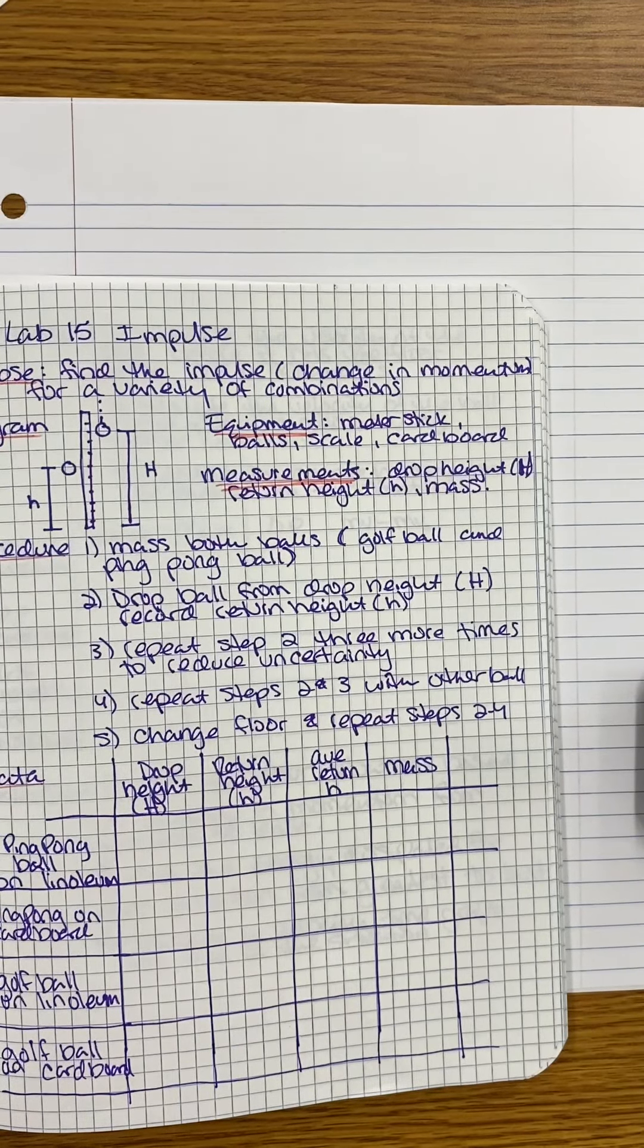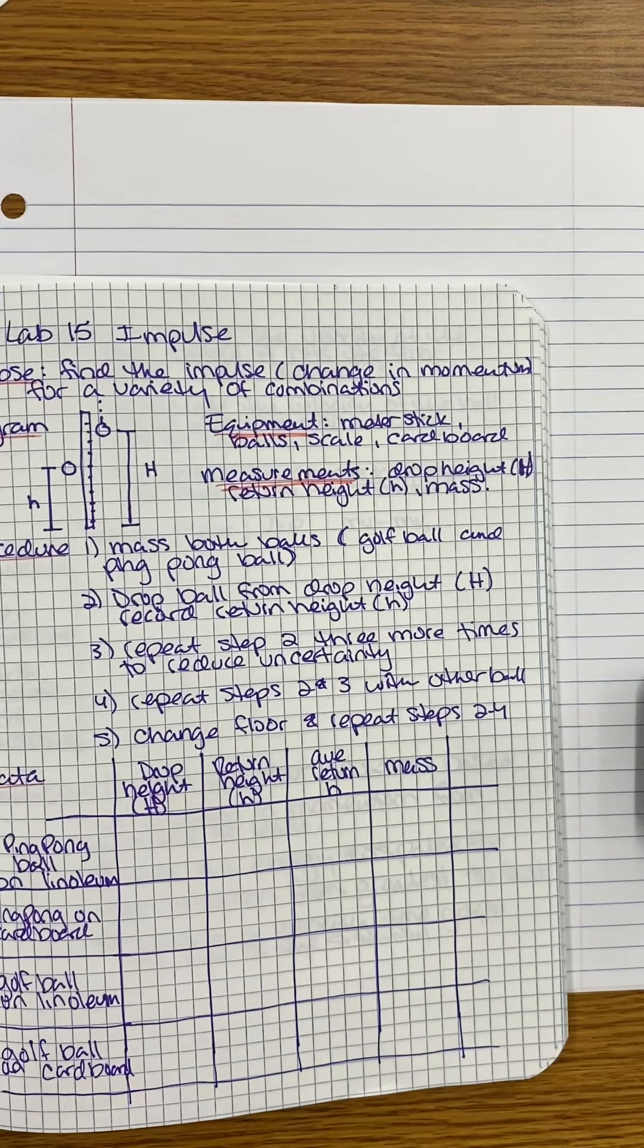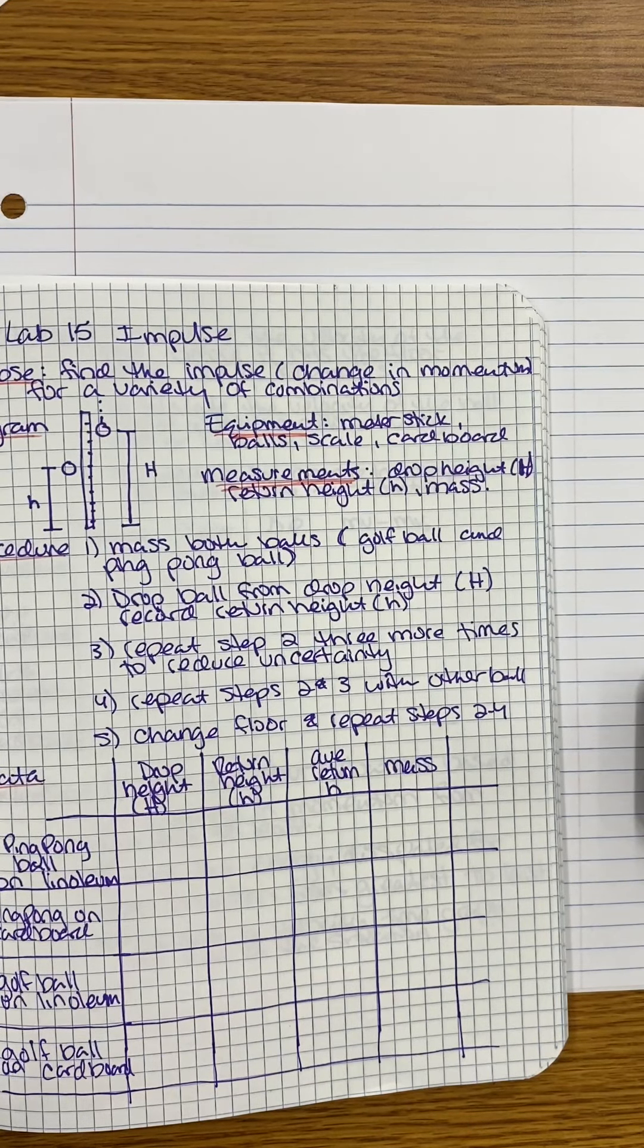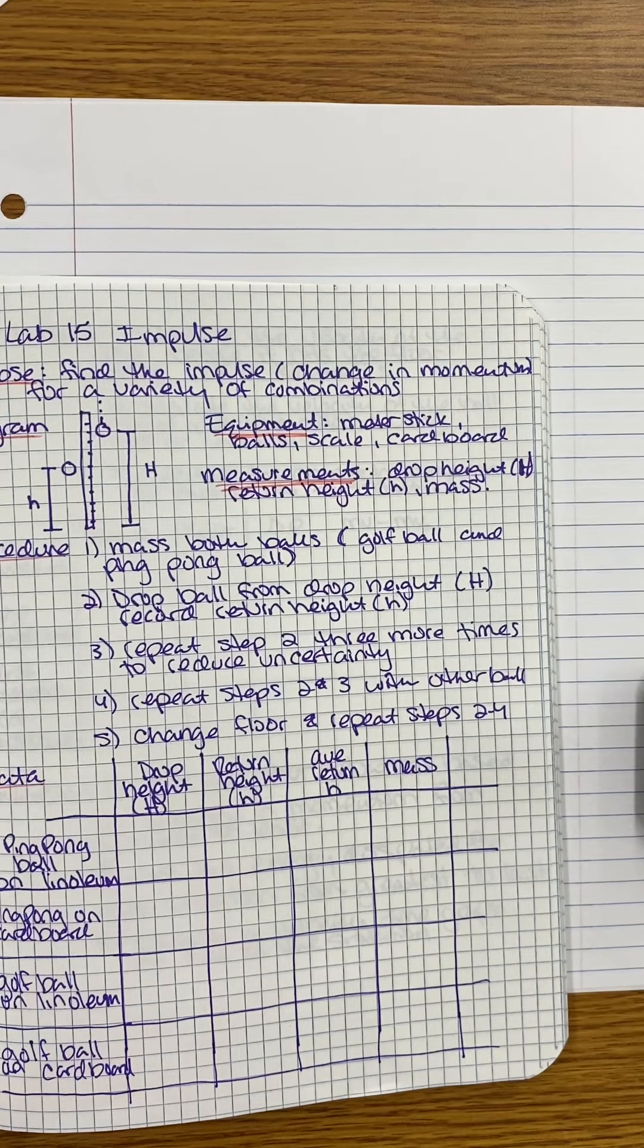All right, this is the lab notebook that goes with the impulse lab with the dropping of the two different kinds of balls along the wall.